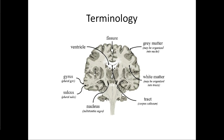We also have a few important pieces of terminology. We have fissures, which are invaginations that go deep into the brain. Gyri are places where the brain bulges out in a little fold, and sulci are places where it folds in.